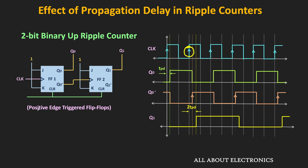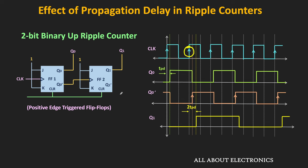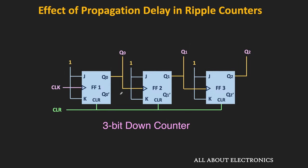Starting from the LSB, as we move towards the MSB position of the counter, the propagation delay of each flip-flop gets added. The flip-flop at the MSB position will respond after the total propagation delay of N times TPD, where N is the total number of flip-flops in the counter. So for the 3-bit counter, the flip-flop at the MSB position will respond after a total propagation delay of 3 times TPD.